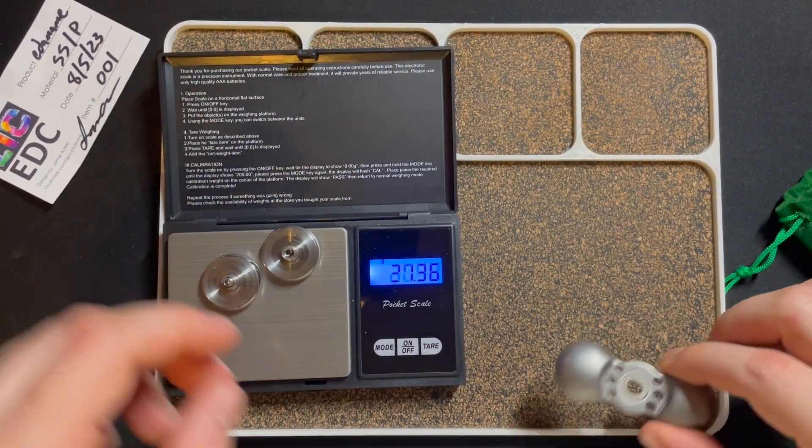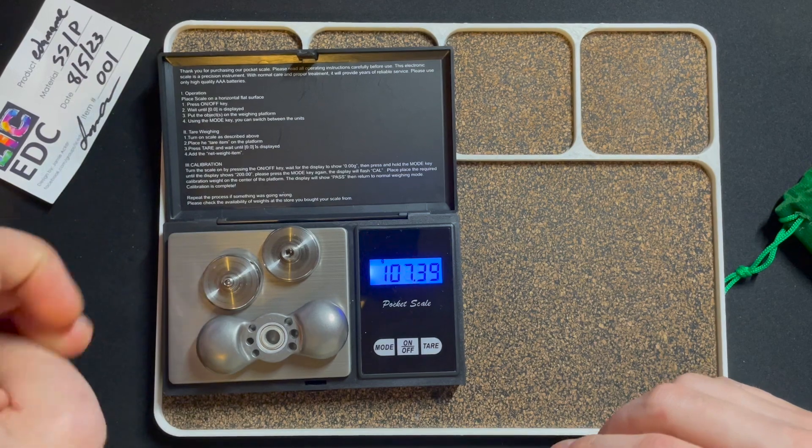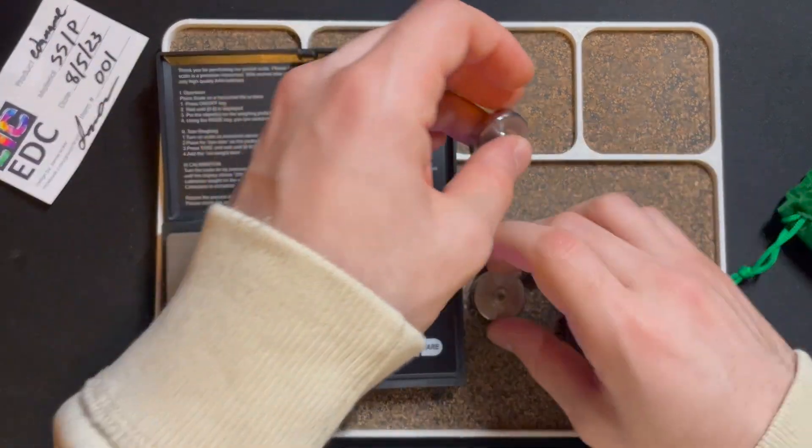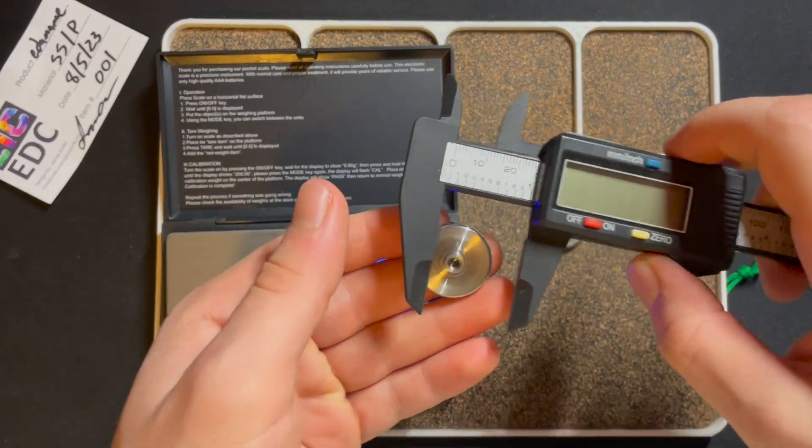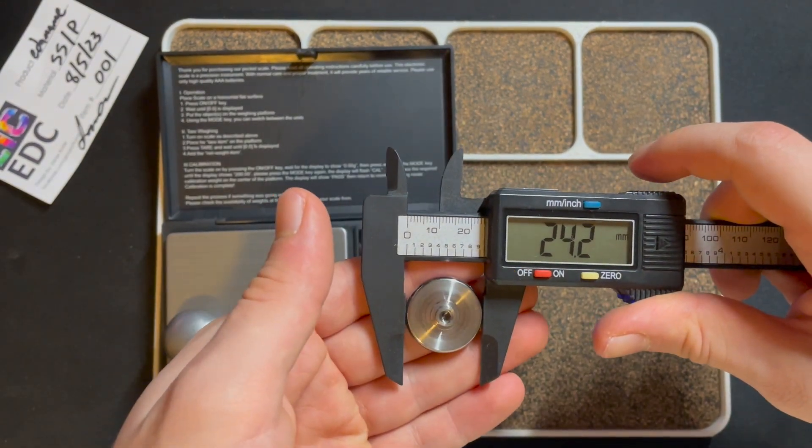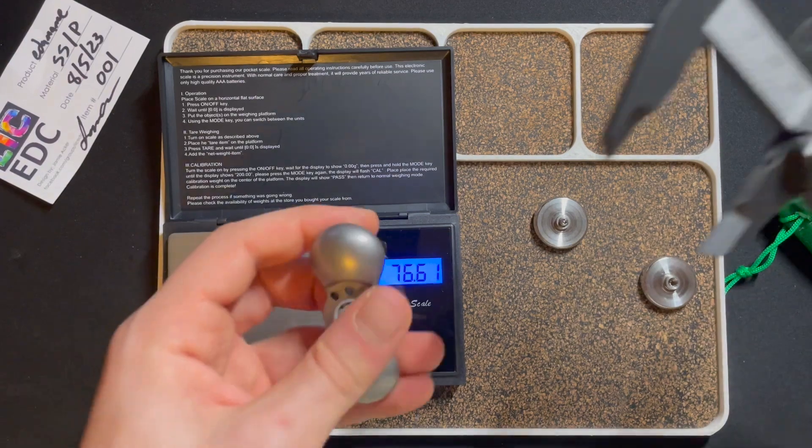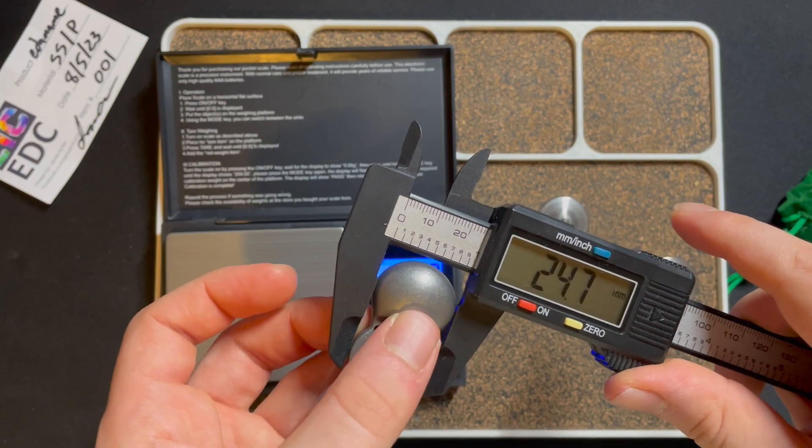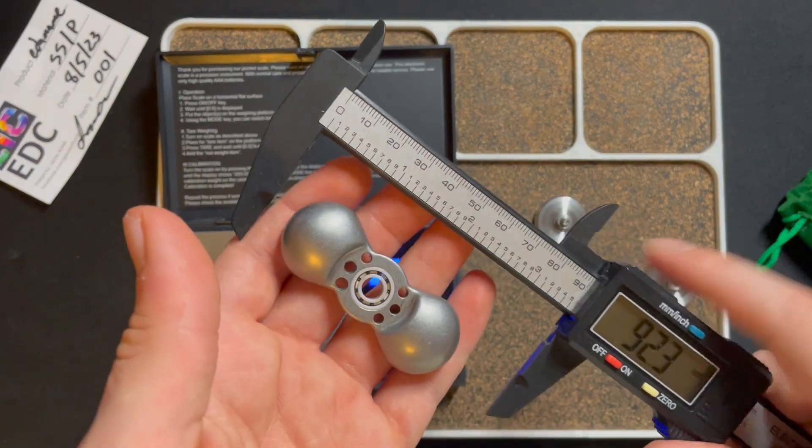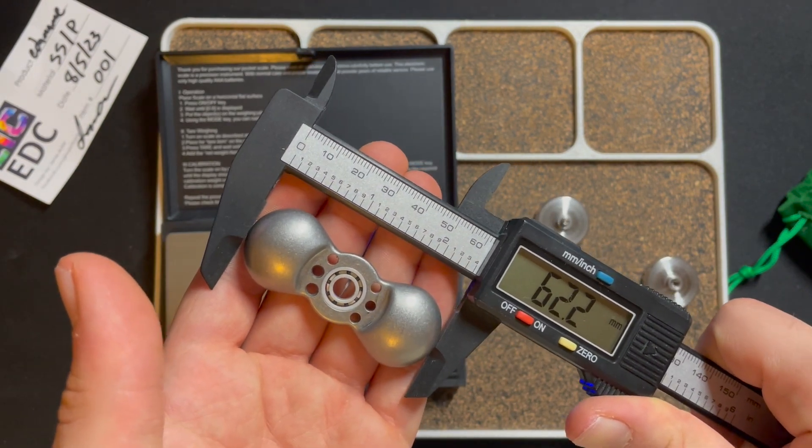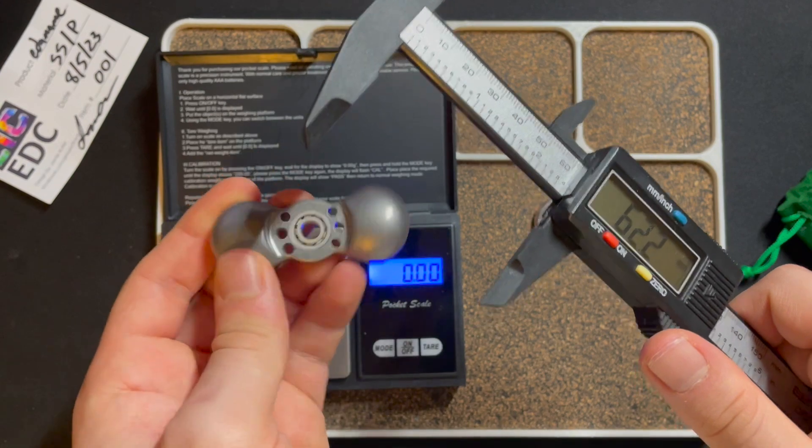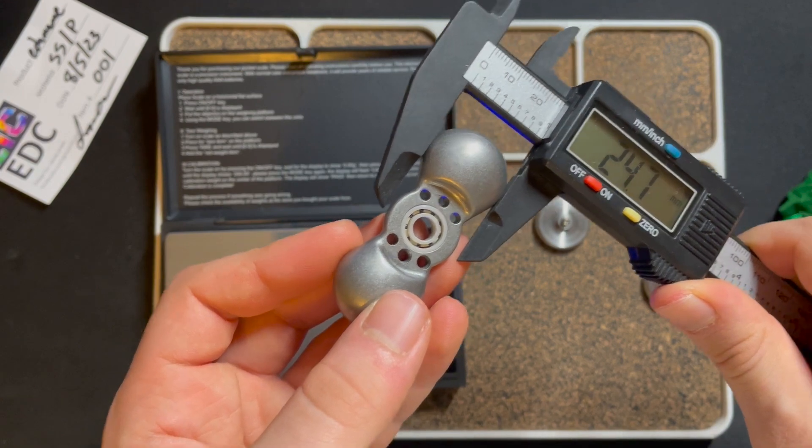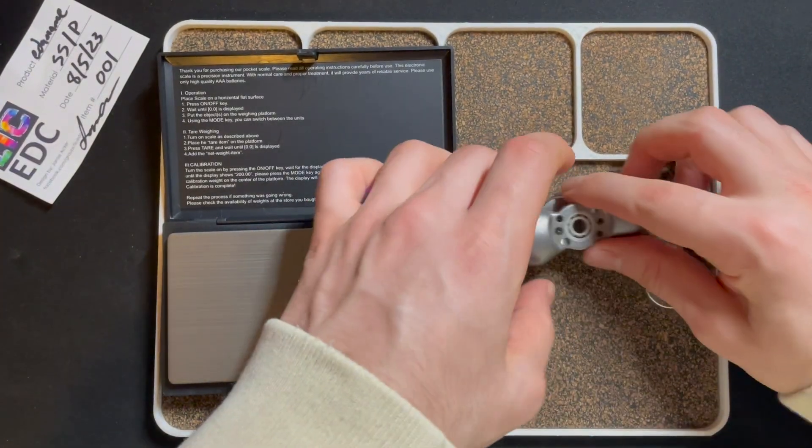The buttons are 32 grams, and with the body it's 108. Great weight. And the body alone is 76. The buttons are 24.2, the body is 24.7, 62.2, 24.7. Nice.